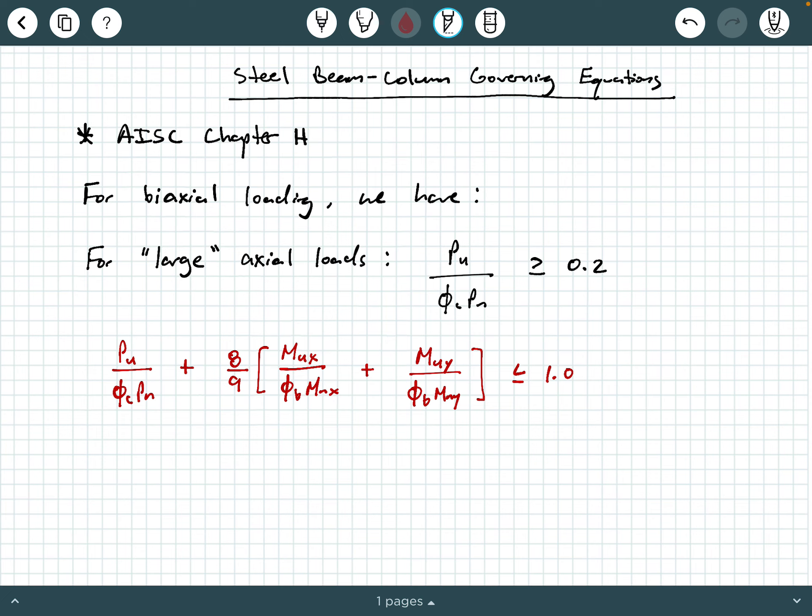So this is still a form of an interaction equation. You have the axial component and you have the flexure component, and together, when you add them together, should be less than or equal to 1, and this is the interaction equation we use whenever you have PU over φcPN is greater than or equal to 0.2. So the first thing you need to do is check this inequality here, PU over φcPN, and if it turns out to be bigger than or equal to 0.2, then you enter into this interaction equation. Okay.